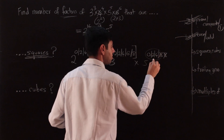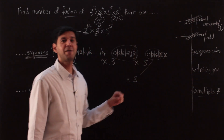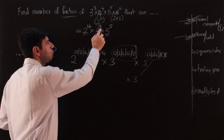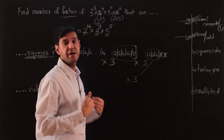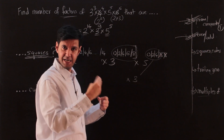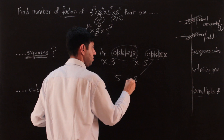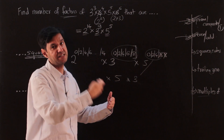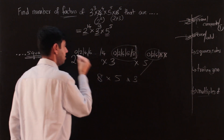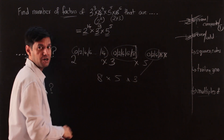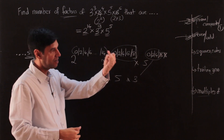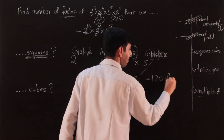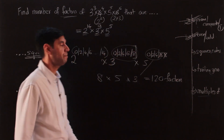Now we count the possibilities. For the first prime, counting even numbers from 0 to 14 gives 8 possibilities (0, 2, 4, 6, 8, 10, 12, 14). For the second prime, even numbers from 0 to 8 give 5 possibilities. For the third, only 0 and 2 give 3 possibilities. So the total number of factors that are perfect squares is 8 × 5 × 3 = 120.